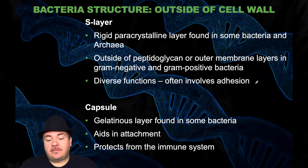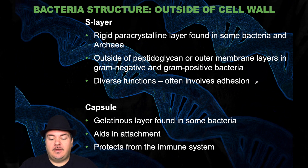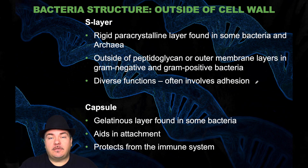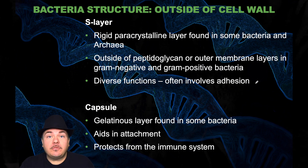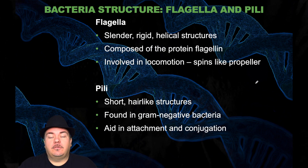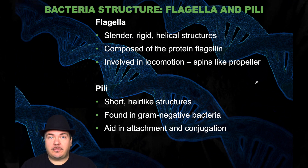Bacteria also have structures outside of the cell wall. You can have an S-layer, which is a rigid paracrystalline layer found in some bacteria and archaea, outside of the peptidoglycan or outer membrane. It has diverse functions including adhesion — helping cells stick to structures. You can also have a capsule, a gelatinous layer found in some bacteria, which aids in attachment to substrates and can protect bacteria from our immune system. Bacteria can also have flagella — slender, rigid, helical structures composed of the protein flagellin, involved in locomotion, spinning like a propeller to allow the bacteria to swim.